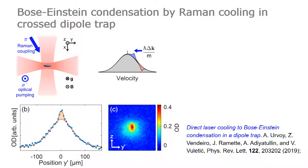We then generalized this to a more accessible system — for many experiments — in a cross-dipole trap, where we managed to do the Doppler version of Raman cooling: not Raman sideband cooling but Doppler Raman cooling, where you remove atoms from a higher-velocity class and park them back in a lower-velocity class, and then remove the entropy from the system by optical pumping. We had reached Bose-Einstein condensation in this cross-dipole trap with a small condensate.